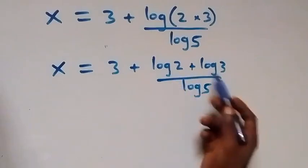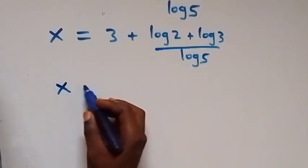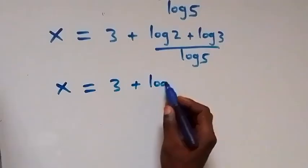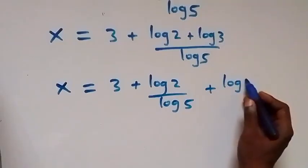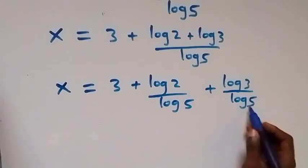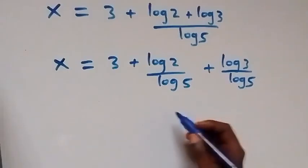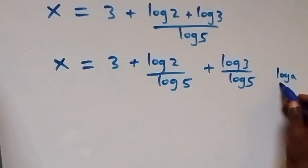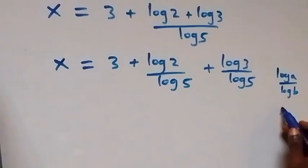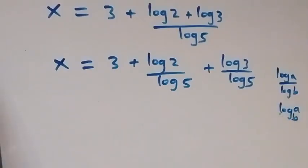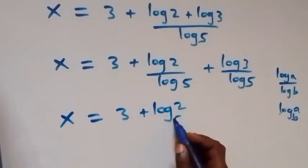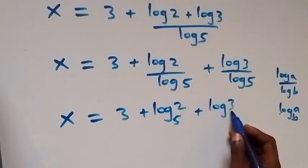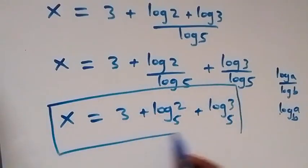We can separate this fraction, and this becomes x equals 3 plus log 2 over log 5 plus log 3 over log 5. Here we have x equals 3 plus log 2 to base 5, then plus log 3 to base 5. So the value of x in this given problem is 3 plus log 2 to base 5 plus log 3 to base 5.